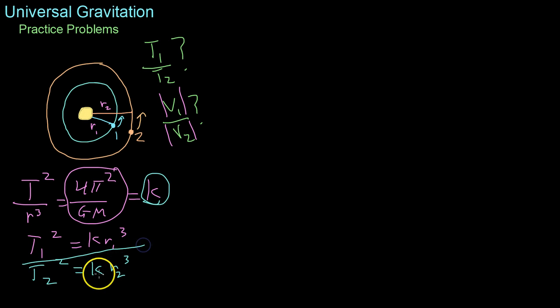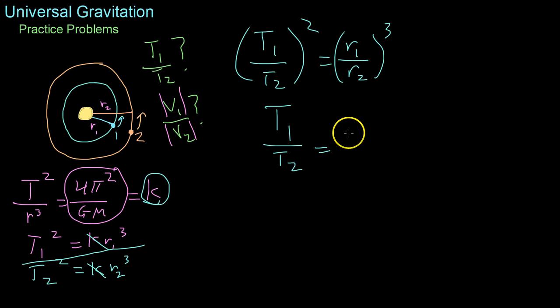Now dividing one equation by the other, we cancel out the k values, we get that t1 over t2, all squared equals r1 over r2, all cubed. Or that t1 over t2 equals r1 over r2 to the three halves.